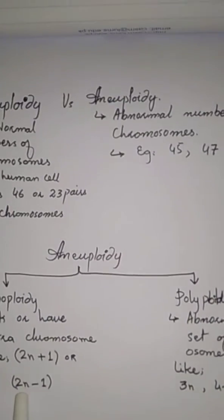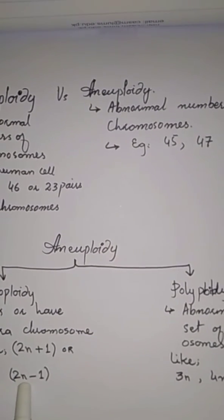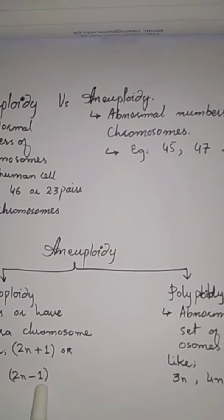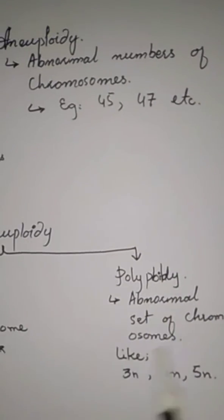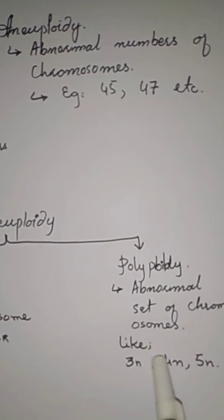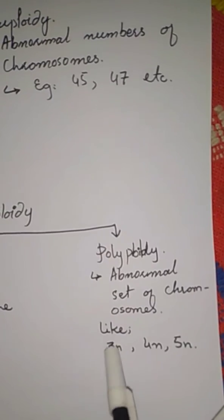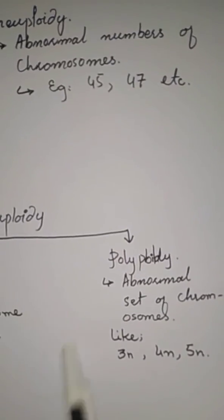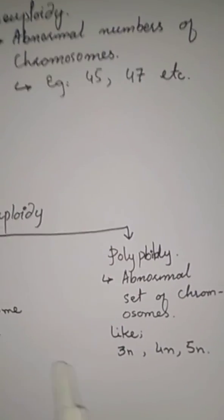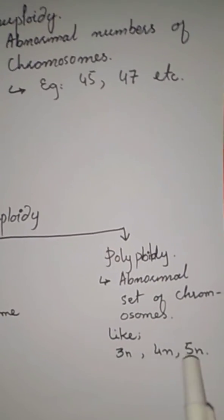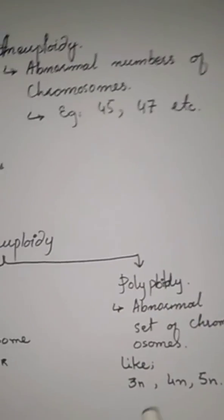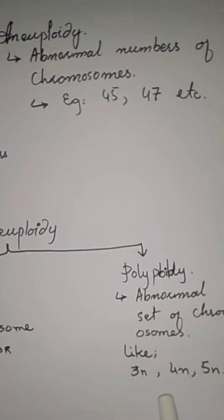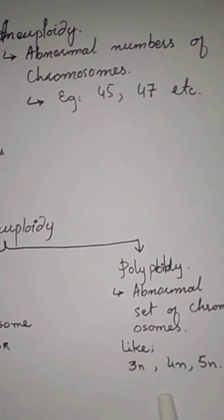Monosomy means a chromosome is decreased from the normal set. The normal set is 2N, whereas 3N, 4N, and 5N are abnormal sets in living organisms. However, plants normally show polyploidy, such as wheat, sugarcane, and banana.